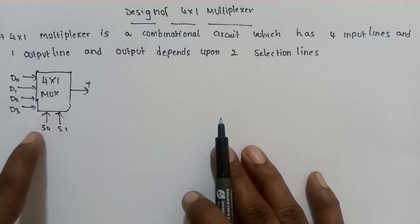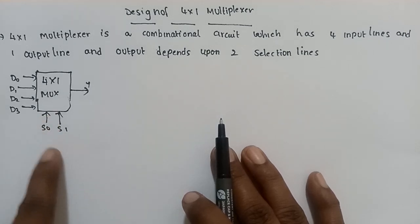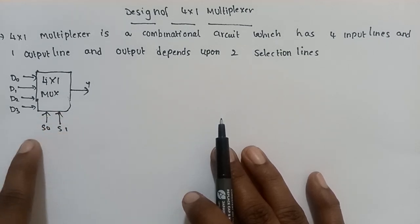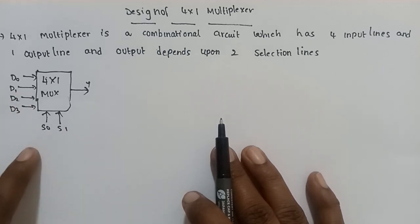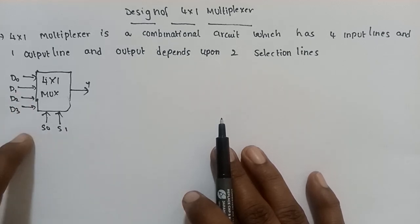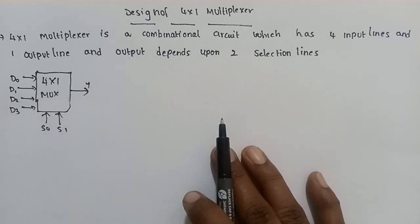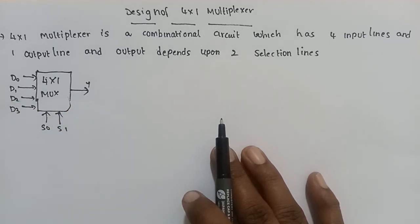The output depends upon the selection lines. There are 2 selection lines in the multiplexer. Those 2 selection lines will determine the output. So, we will discuss the design in this video.